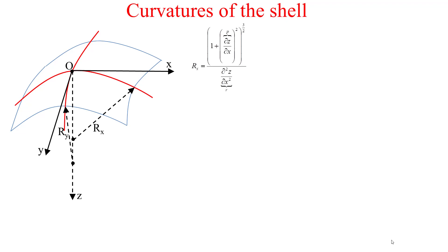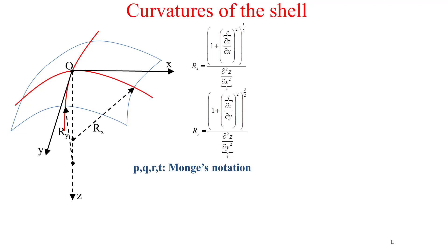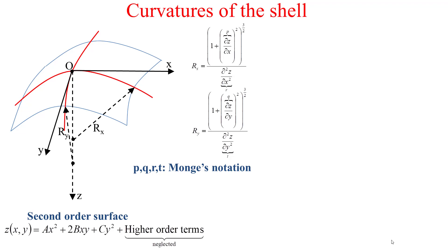The radii rx and ry are determined by formulas involving Monge's notation. Here dZ/dX is denoted by small p, and the second derivative d²Z/dX² is denoted by small r, while d²Z/dY² is denoted by small t. Now, if we consider this mid surface as a second-order surface, the coordinate Z of each point is determined using a second-order polynomial in X and Y, with constants A, B, and C.